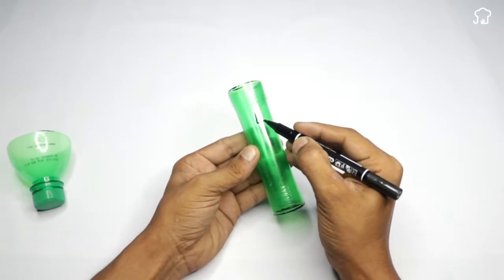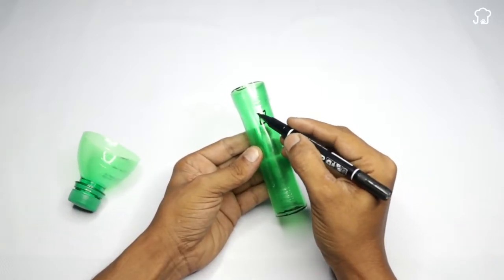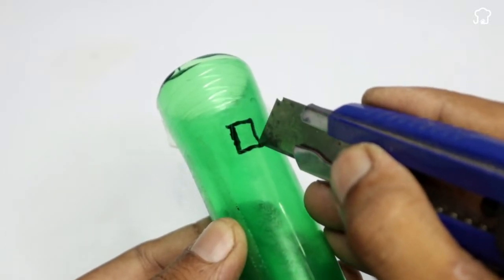Again, with the marker, we will draw a box in this part, and then remove it with the cutter, so that we are left with this small gap.